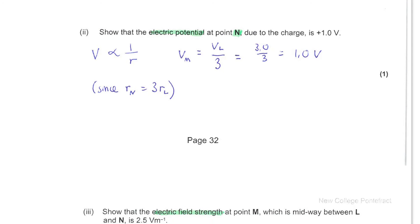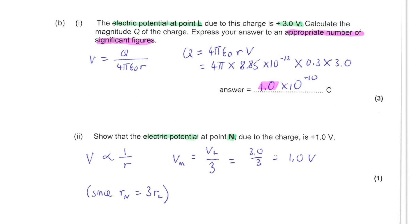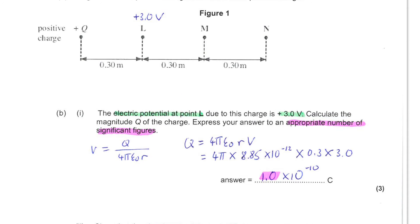Moving on, you are asked to show that the electric potential at N due to the same charge is 1 volt. So just glancing back at the diagram, we know the potential here at L and we'd like to know the potential here at N. Notice the distance from Q to N is 3 times the distance from Q to L.